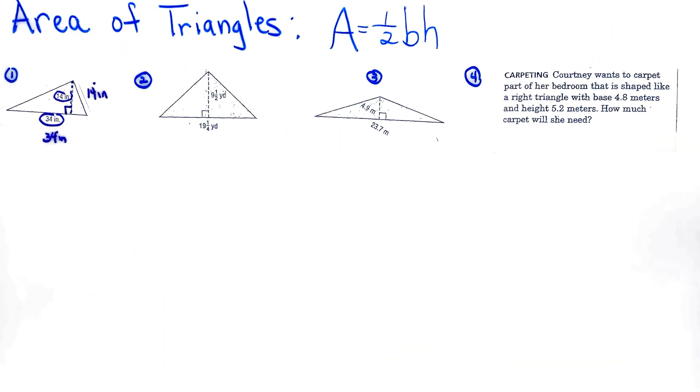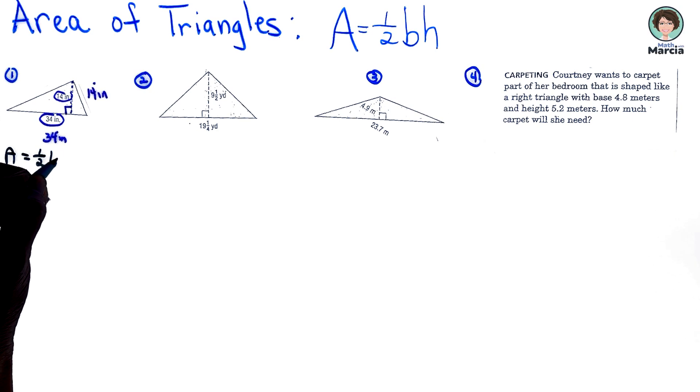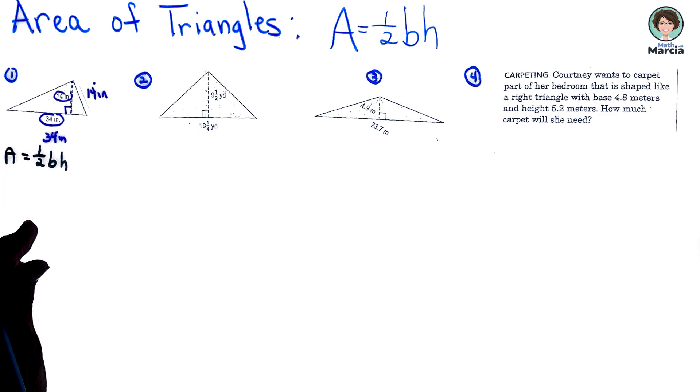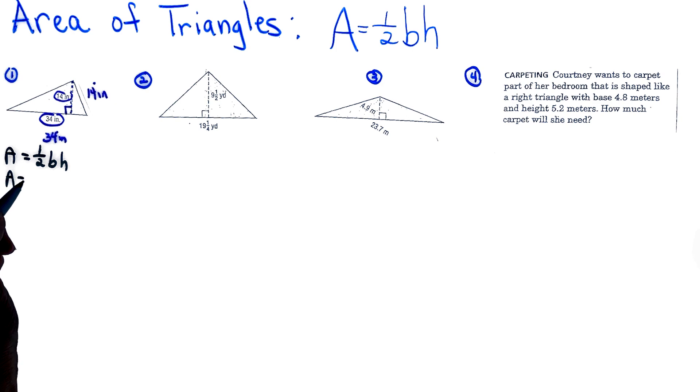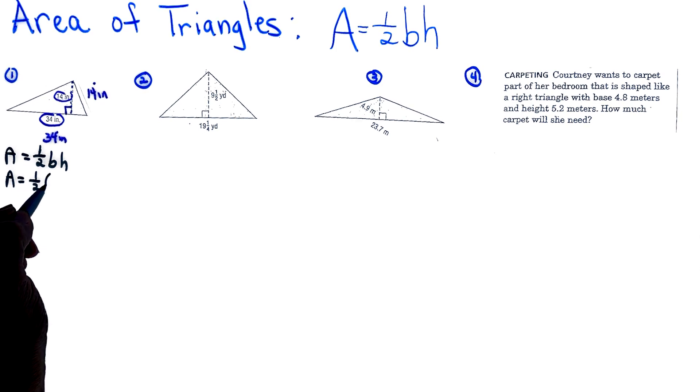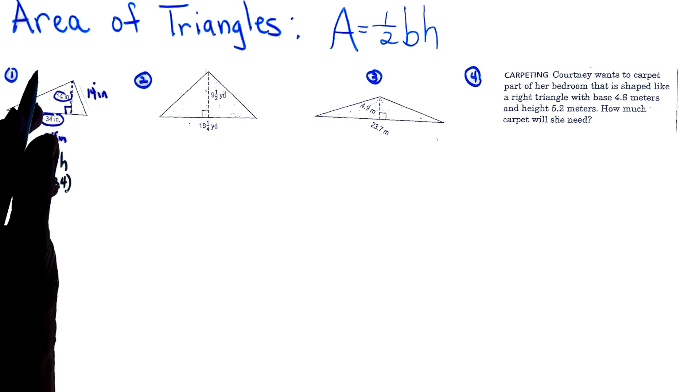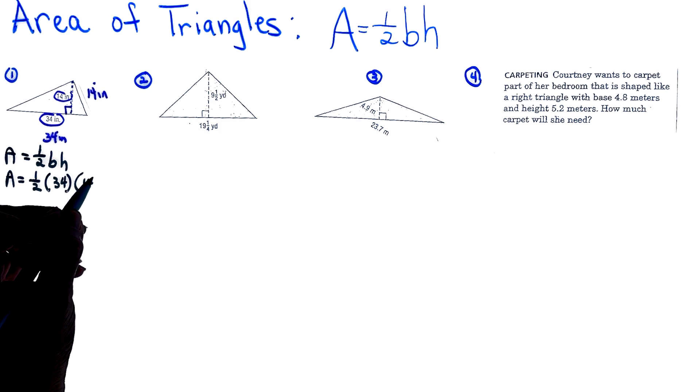When we use the formula, and I'm going to always copy it, area is equal to one-half base times height. That's going to help me put my numbers in the right places. So area is equal to one-half, the base is 34, and we have a height of 14.